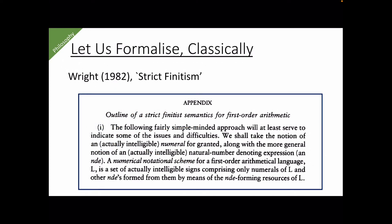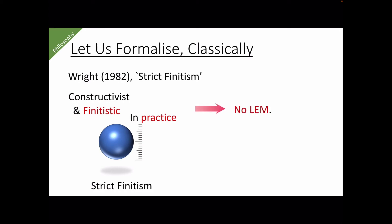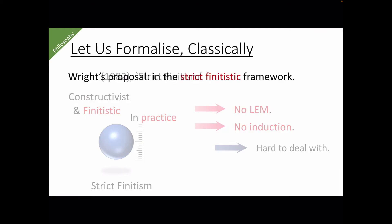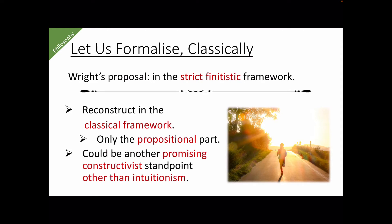The attempt of formalizing strict finitistic reasoning into a logic has already been done by Wright. In his paper, he included an outline of strict finitistic semantics for first-order arithmetic. But he tried to formalize and develop strict finitistic logic in the strict finitistic framework itself, which meant that he could not use the LEM. Also, he could not use induction in the normal sense. It was no doubt a hard job to do. So what I will do is to reconstruct Wright's logic in the classical framework. Also, I am going to restrict myself in the propositional part. But I hope that this could be a first step towards the future where strict finitism is considered to be another promising constructivist standpoint other than intuitionism.